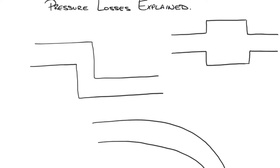That flow needs to leave the pump, pass through the circuit, go through hoses, connectors, valves, fittings, and manifolds to get to the actuators — the motors or cylinders — to perform the work we want done and make something move.